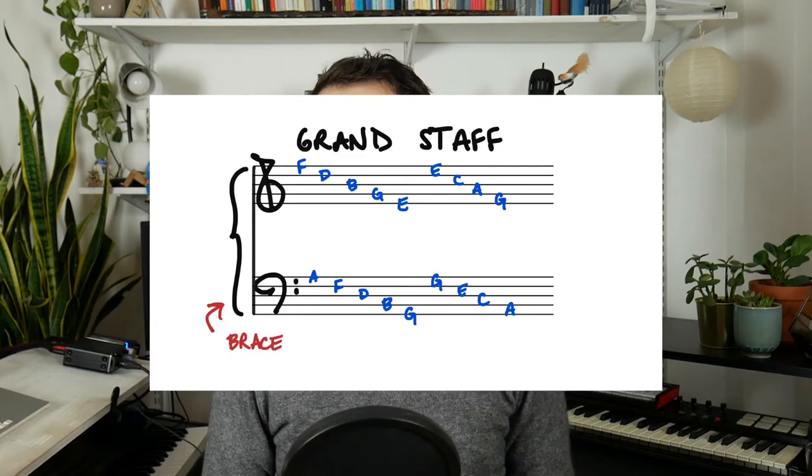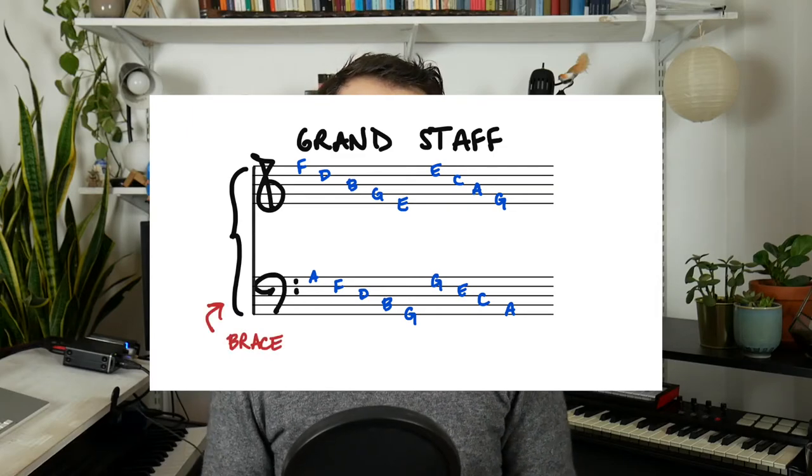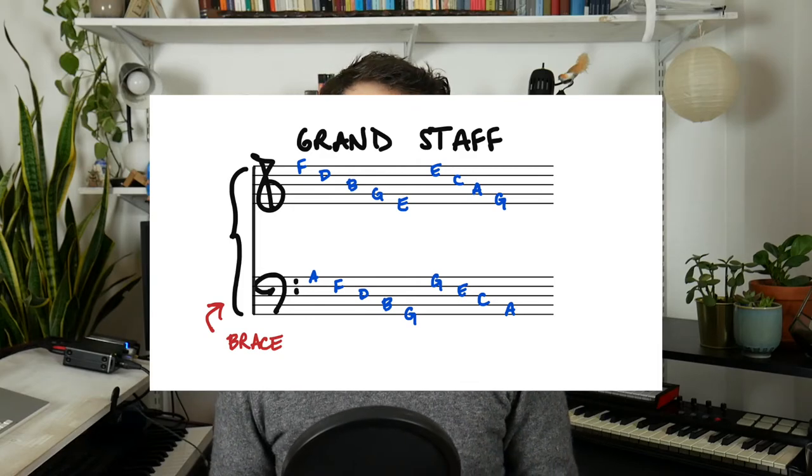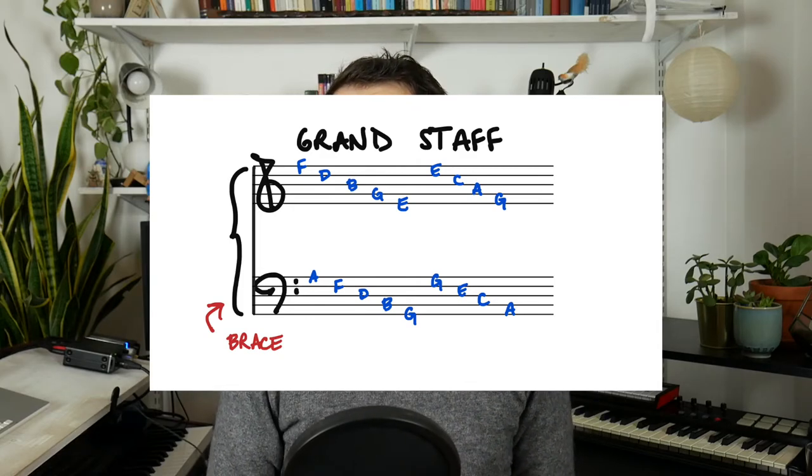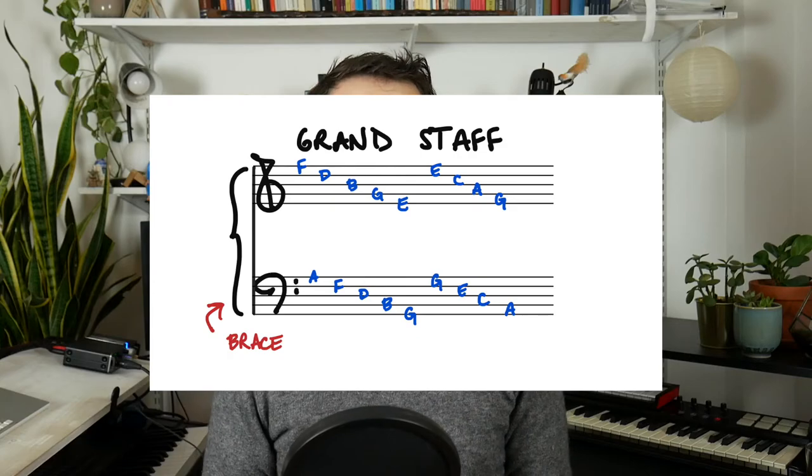The grand staff is primarily used by keyboard instruments like the piano or organ, although it's also commonly used for SATB settings as well as harmonic analysis. We'll certainly be seeing more of the grand staff later, but for now just make sure you memorize how the two clefs intersect at middle C. Otherwise, your focus should primarily be on developing your ability to read notes in the bass clef.